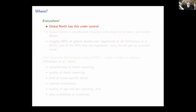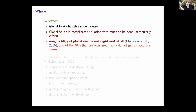Where are these issues particularly important? I'm going to make the bold statement that the global north has this under control, pretty much — not strictly true, but in a comparative sense, more or less true. The global south, on the other hand, is a very complicated situation with much to be done. Here is the key point I want to make: roughly 60% of global deaths are not registered at all, a figure published by Mikkelsen et al. in 2015 in their comprehensive review of civil registration and vital statistics systems globally.